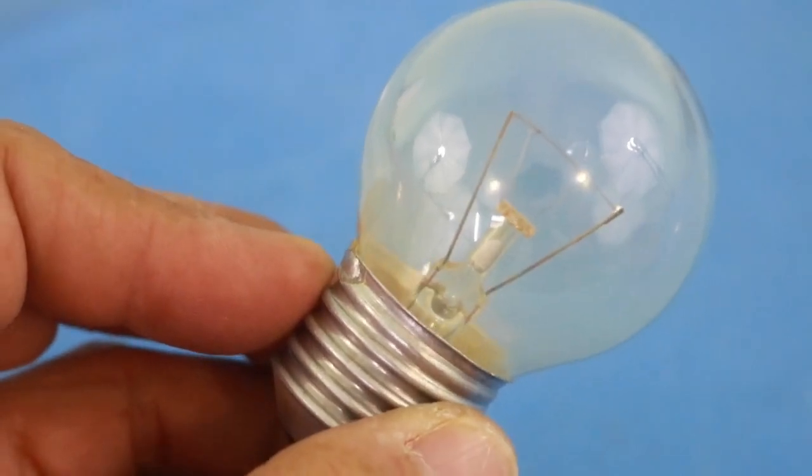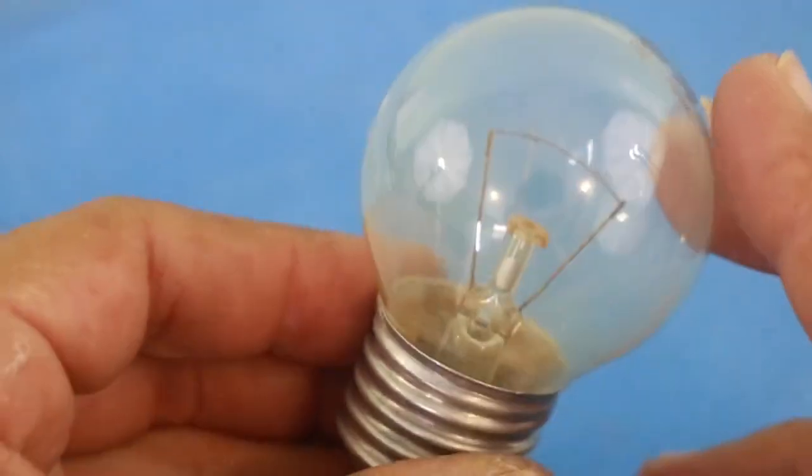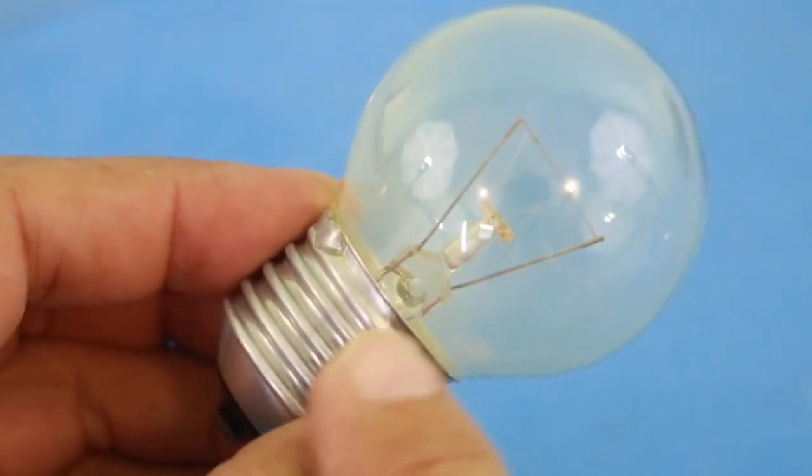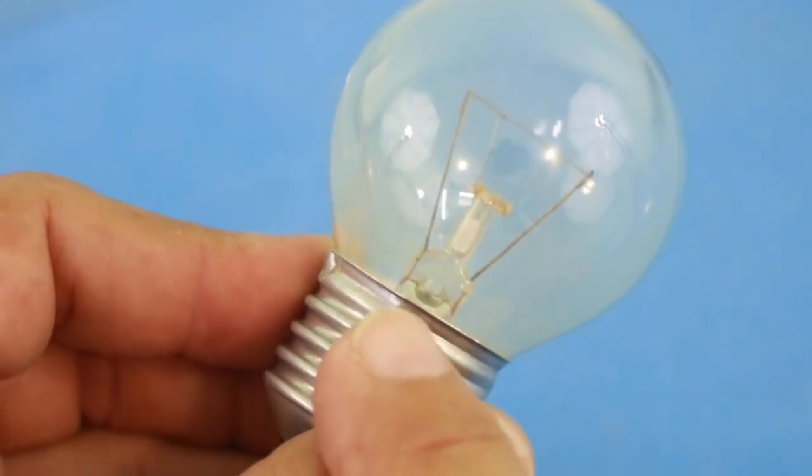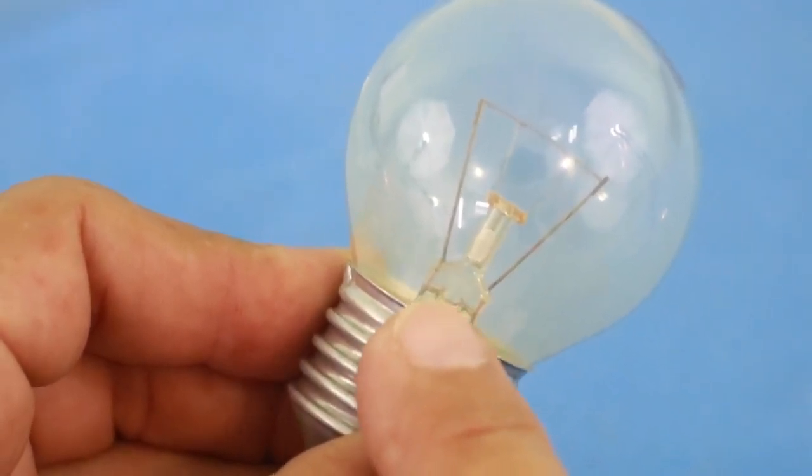In order to make the experiment, I will use this incandescent lamp. I will break the lamp and use the internal part because, as you can see, it has two wires attached to the glass.